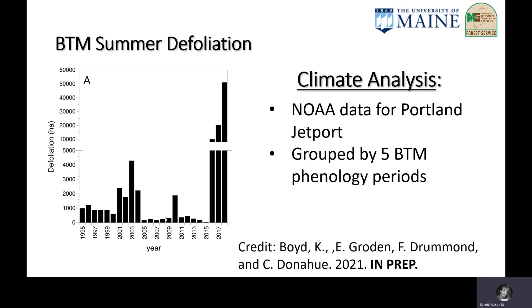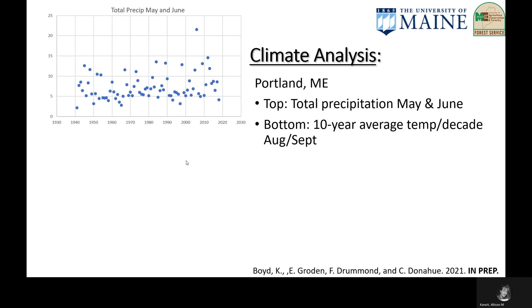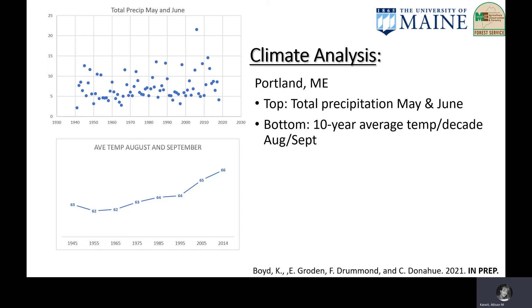This figure shows summer defoliation by brown-tailed moth in Maine from 1994 through 2018, based on aerial surveys by the Maine Forest Service from fixed-wing aircraft. The climate data analyzed came from the Portland Jetport, which had the longest climate record for the area of interest and is also located near the center of where brown-tailed moth spread in Maine after the collapse in the 1920s. The top graph shows total precipitation in May and June — there is no real trend in that data. The bottom shows the 10-year average temperature in August and September by decade, showing a clear upward trend.